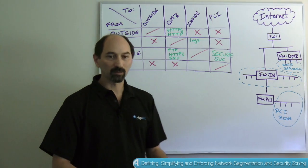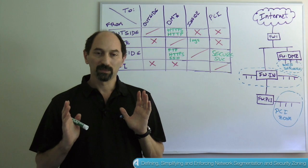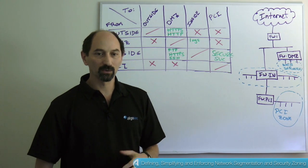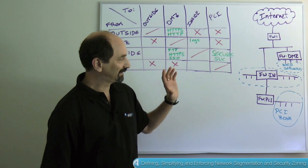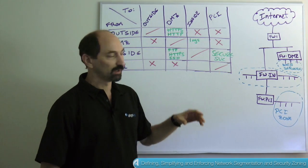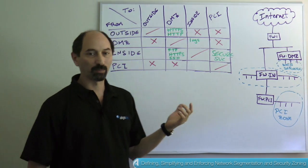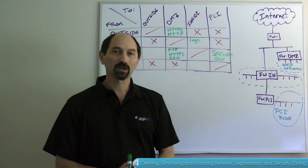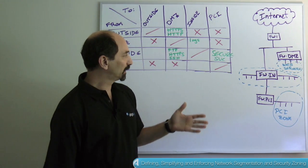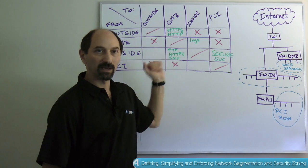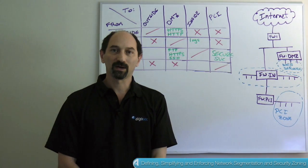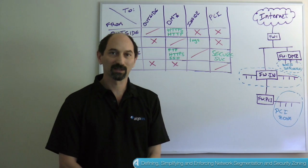So to summarize what we've seen today, in order to simplify your network segmentation and security zoning, what you really should do is define your security zones, write down your high level security policy in zone to zone matrix format, and then consider automated tools that help you enforce that matrix to the actual rules in the policies on the firewalls. Thank you very much for your attention and see you next time.